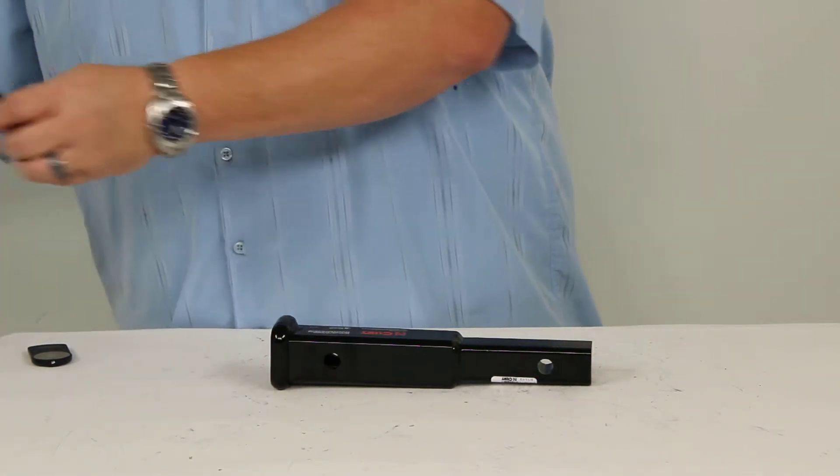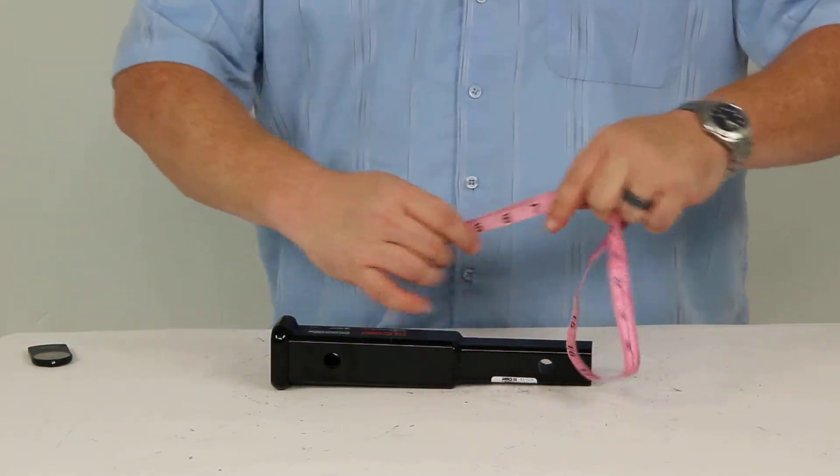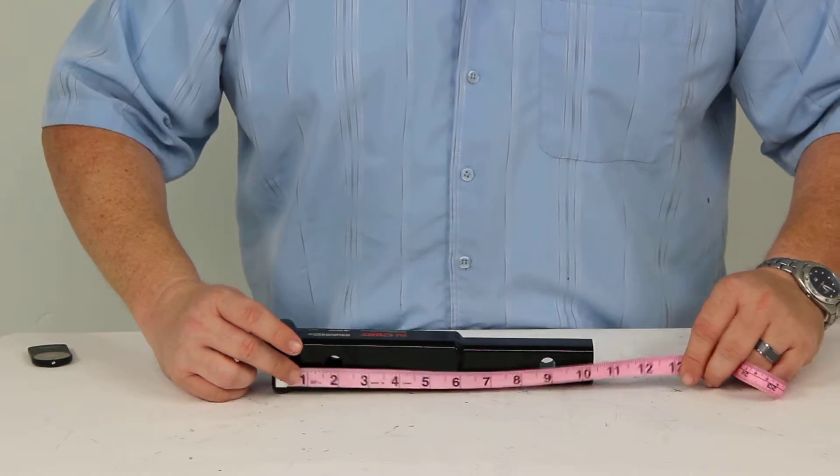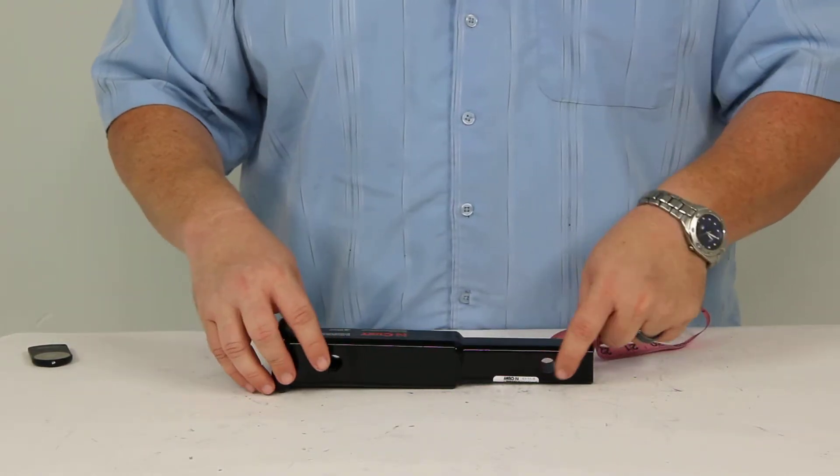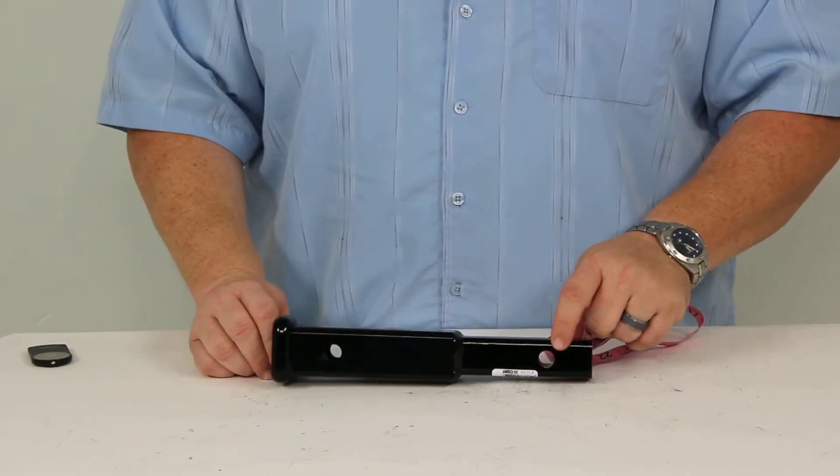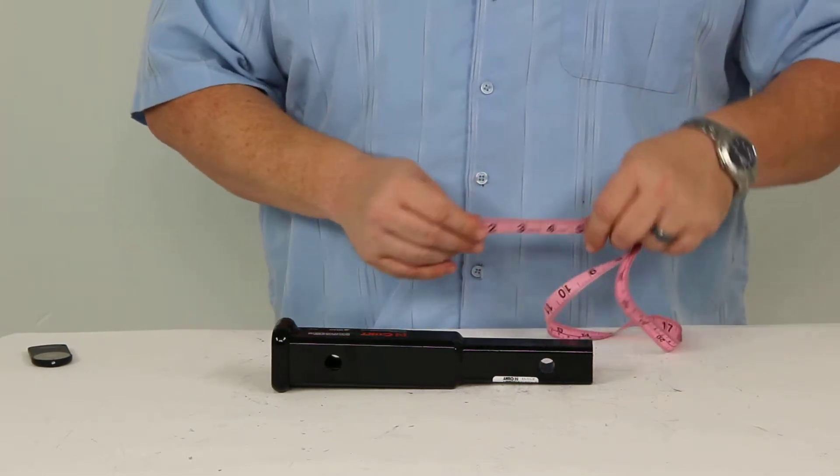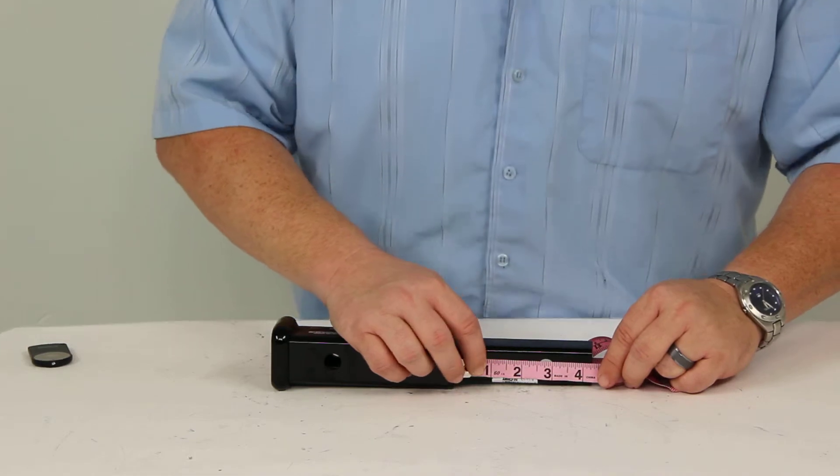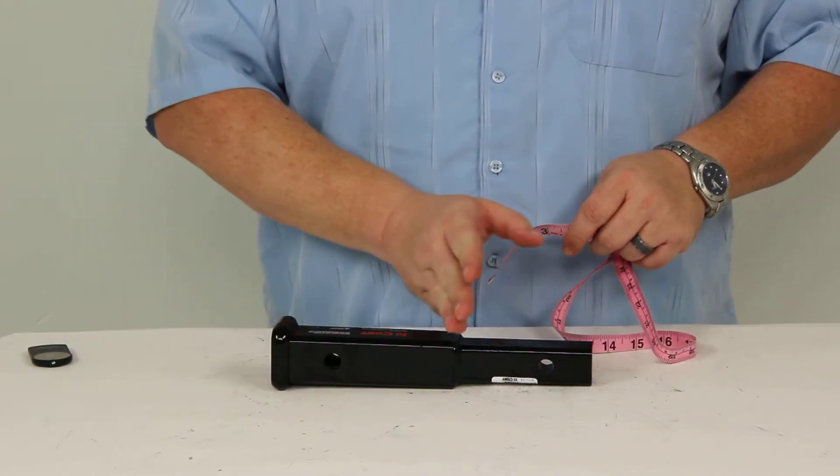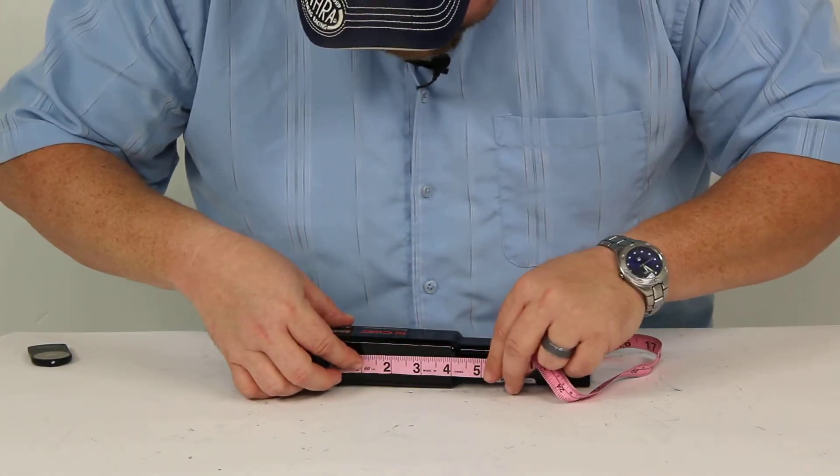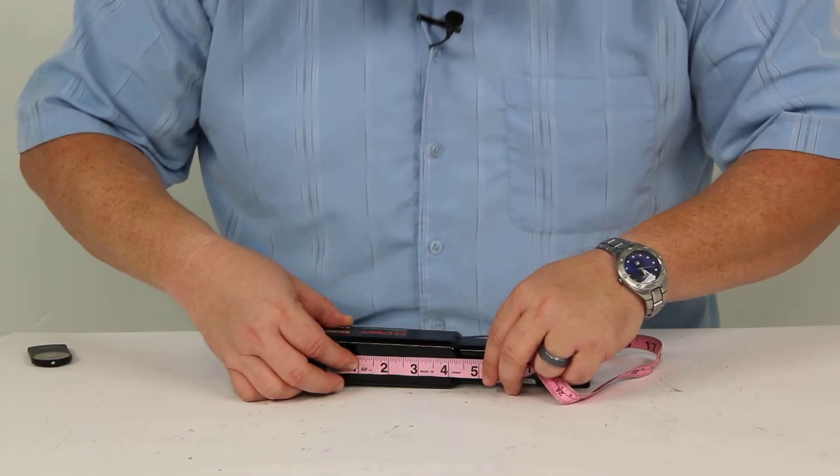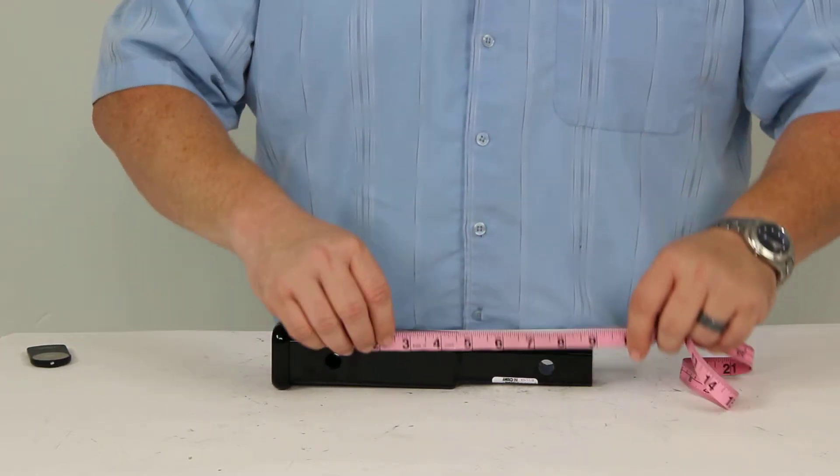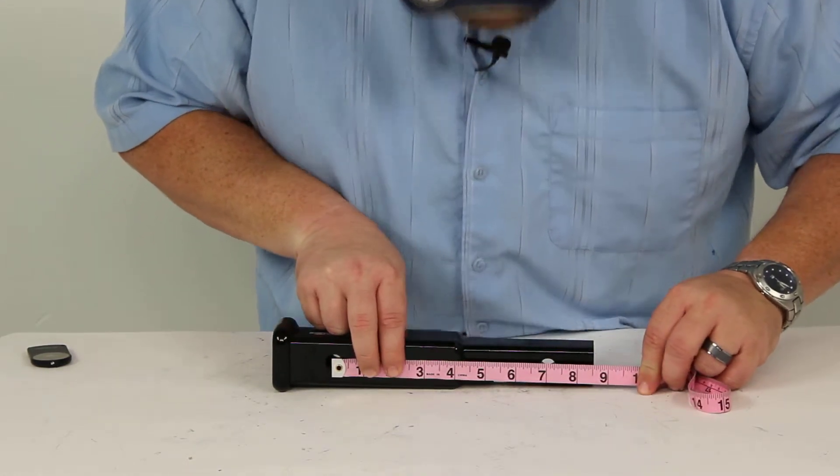Let's take a look at some dimensions. The overall length is 10 1/2 inches. From the first hitch pin hole here to the middle portion where the extender starts is 2 3/4 of an inch. The second hole here to the middle section is 4 1/4 of an inch. And from center to center of the hitch pin holes again is 7 inches.